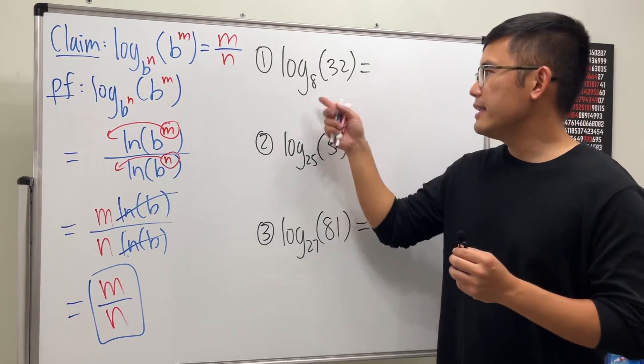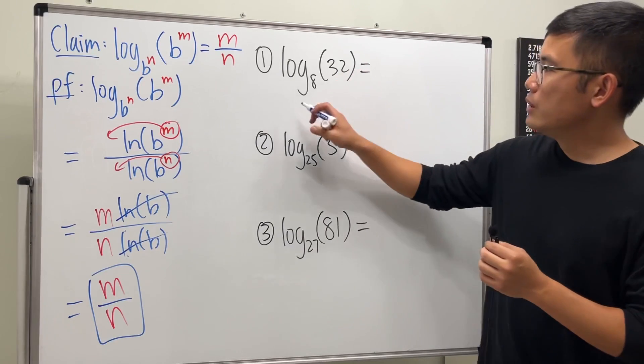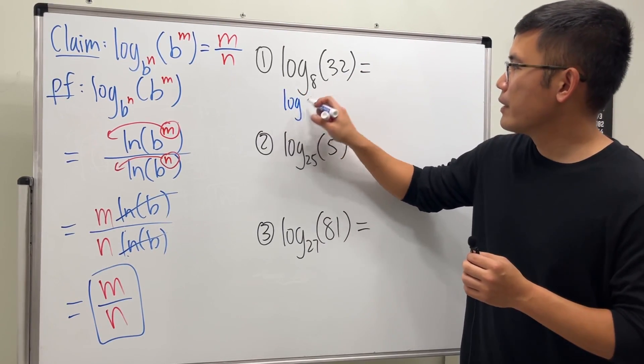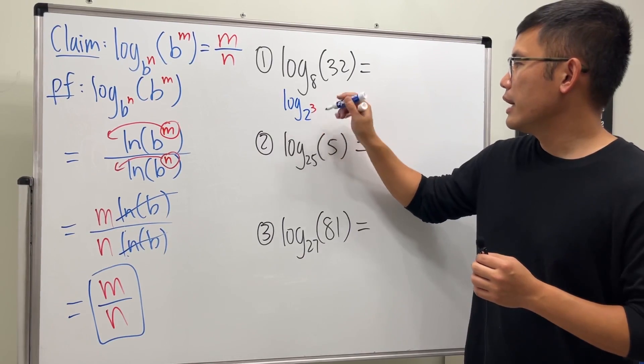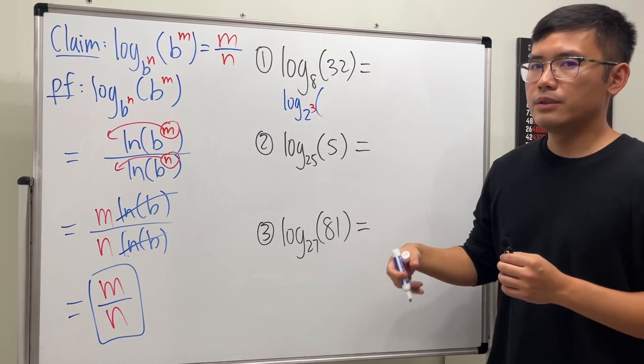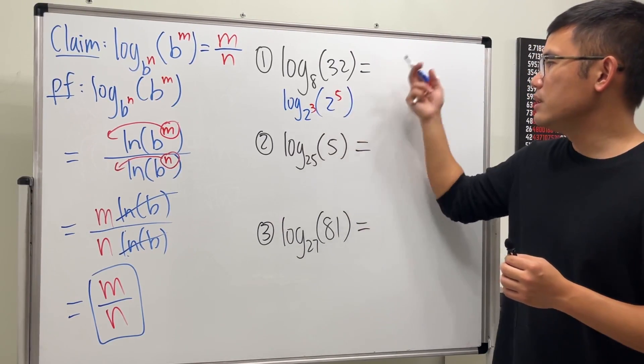We will just have to write 8 and 32 with a common base, which is 2. So look at this: for the 8, we know that's 2 to the 3rd power, and for 32 it is 2 to the 5th power. Once you have that, the answer will just be 5 over 3. Done.